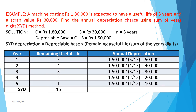The useful life of the machine is 5 years. In the first year, remaining useful life is 5 years. In the second year, remaining useful life is 4 years. Similarly, the remaining useful life of the third, fourth and fifth year is 3, 2, and 1 respectively. The sum of all these years is 15. For the first year: depreciable base is 1,50,000, remaining life is 5, and sum of all years is 15. So 1,50,000 multiplied by 5 divided by 15 equals Rs 50,000.